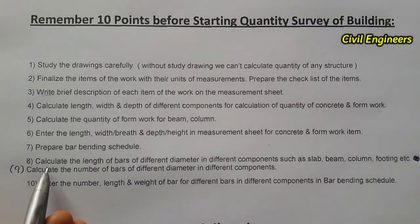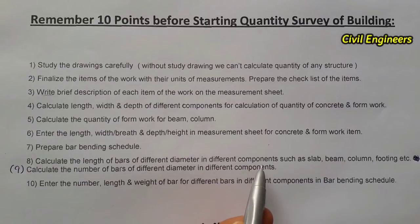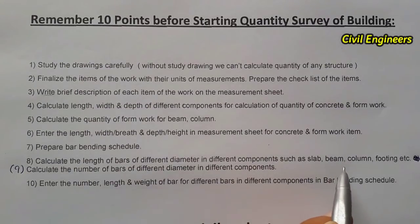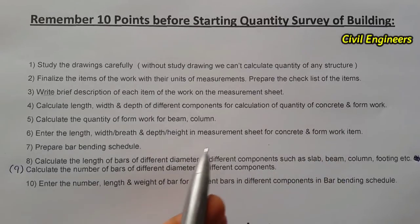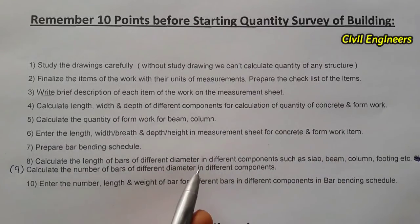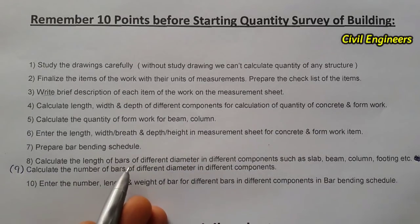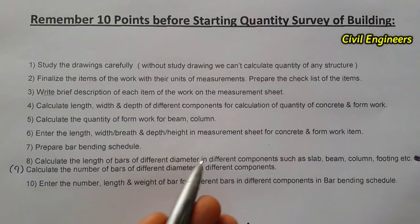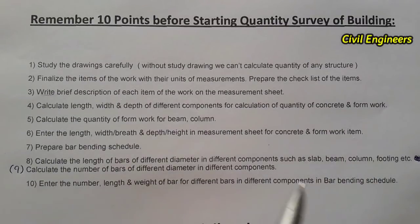The eighth point is to calculate the length of bars of different diameters for different components such as slab, beam, column, footing, etc. We have different types and different diameters of steel, so we have to find the quantity of steel for each different diameter across these components.